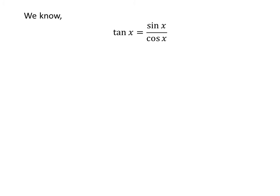As we now know the values of sine of x and cosine of x, let us find the value of tangent of x. Tangent of x is equal to sine of x upon cosine of x. Plugging in the values, tangent of x is equal to minus square root of 3 upon 2, divided by minus half. Since minus half is the common factor in the numerator and denominator, cancelling it gives us tangent of x is equal to square root of 3.